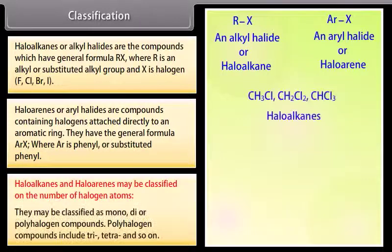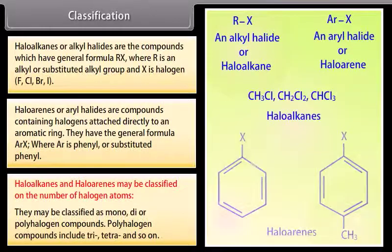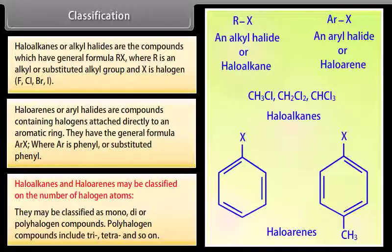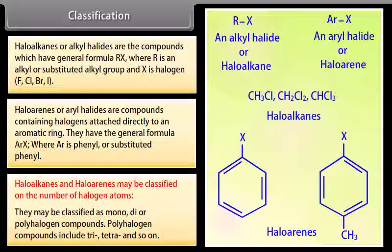Haloalkanes and haloarenes may be classified based on the number of halogen atoms. They may be classified as mono, di, or polyhalogen compounds. Polyhalogen compounds include tri, tetra, and so on.